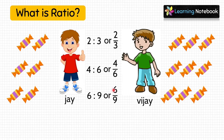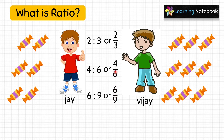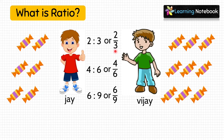Now, students, look carefully at these two ratios: 4 is to 6 and 6 is to 9. Both these ratios, when simplified, they become 2 by 3. So on each day, the ratio of chocolates 2 by 3 remains the same.